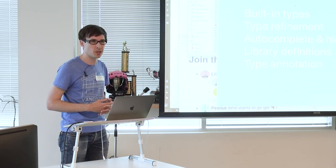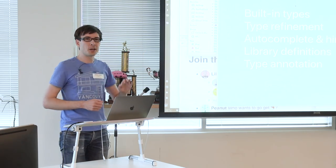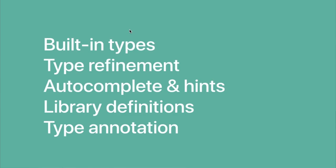Flow is the name of Facebook's JavaScript type checker. You can look it up at flow.org. I'm going to hit five topics. The first four things Flow kind of gives you for free, and then the fifth is when we're actually going to have to put in a little work. So the first thing Flow gives you for free is a bunch of built-in types. Flow ships with type definitions for common APIs like React, the Fetch API, or the Document Object Model.